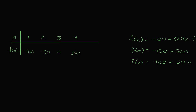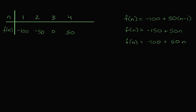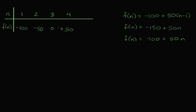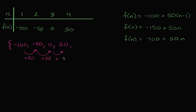Let's do another example. Here we have some function definitions already given. The sequence, viewed in this table, has: first term negative 100, next term negative 50, next term zero, next term 50. It's very clear this is also an arithmetic sequence — starting at negative 100 and adding 50 each time. Pause the video and think about which of these definitions of f are correct — it might be more than one.